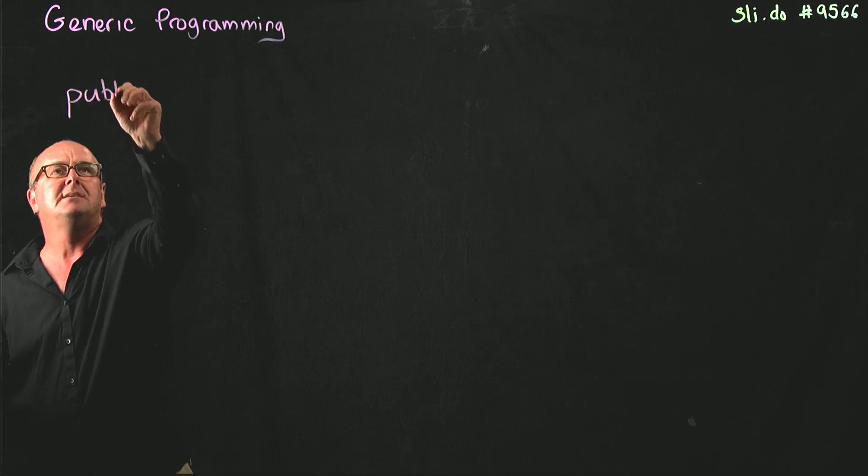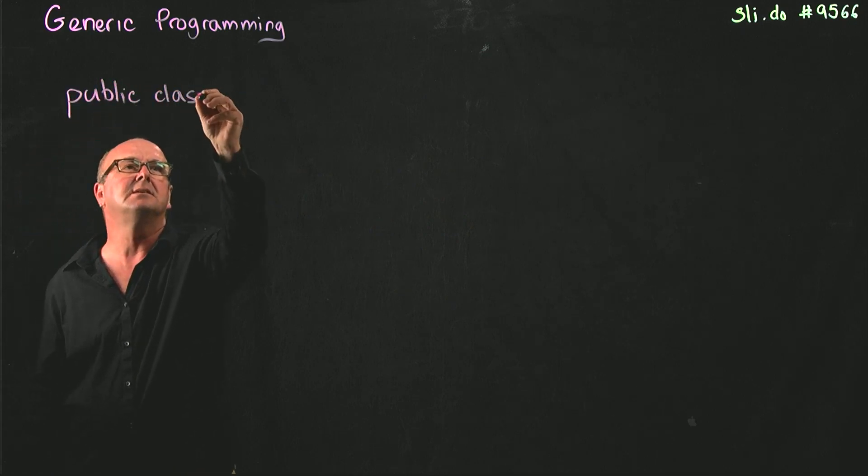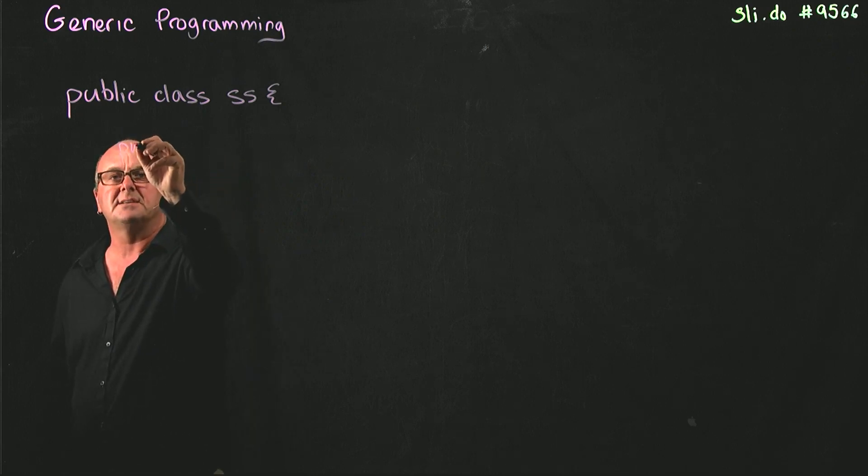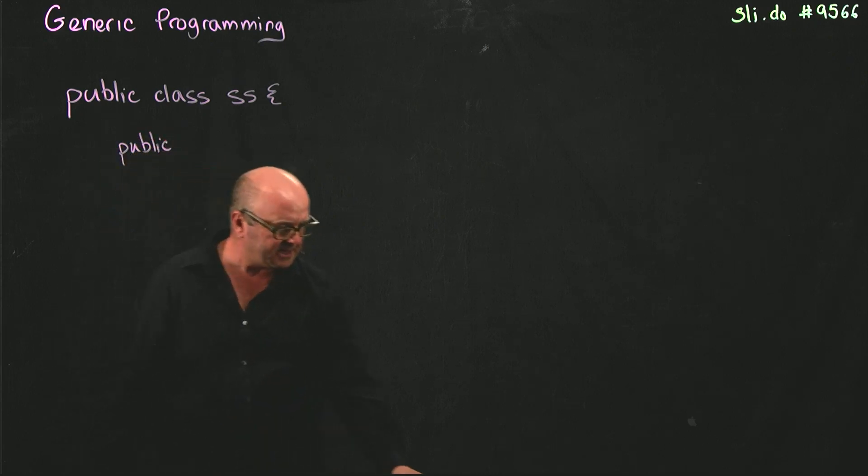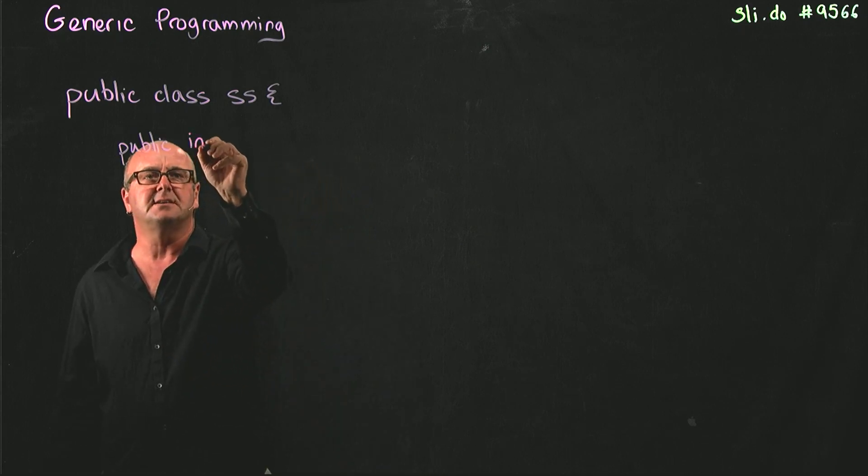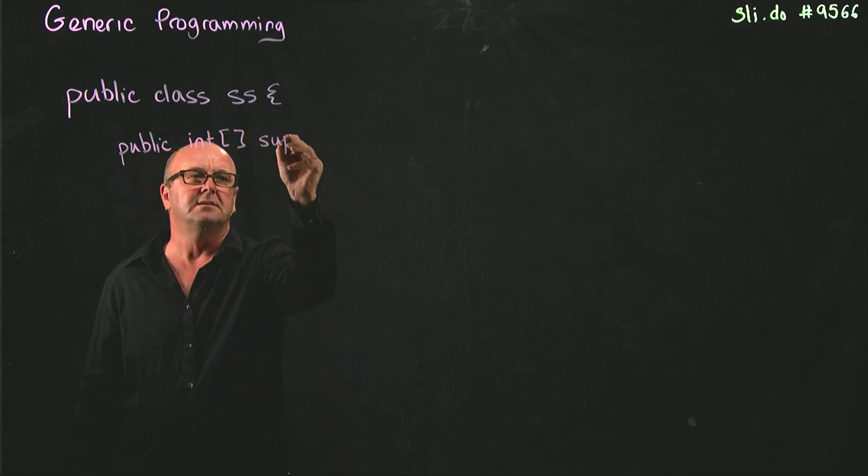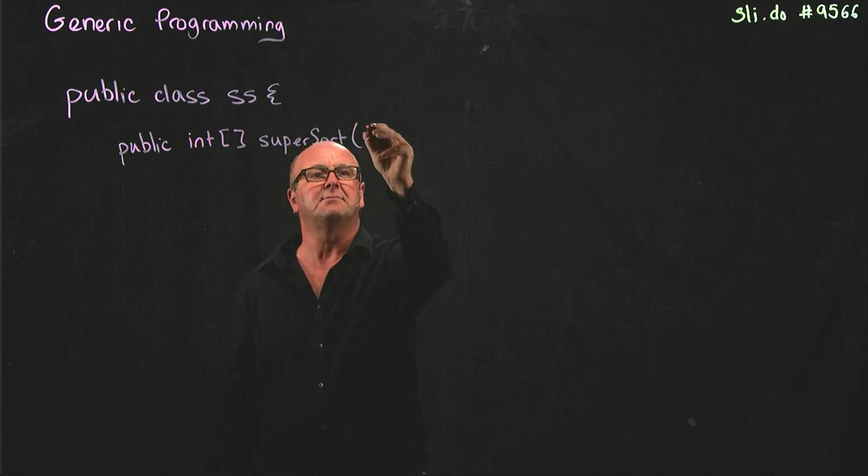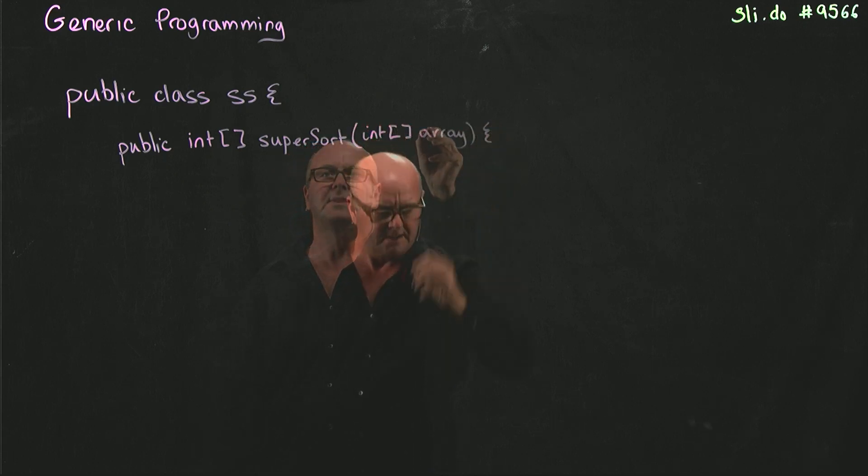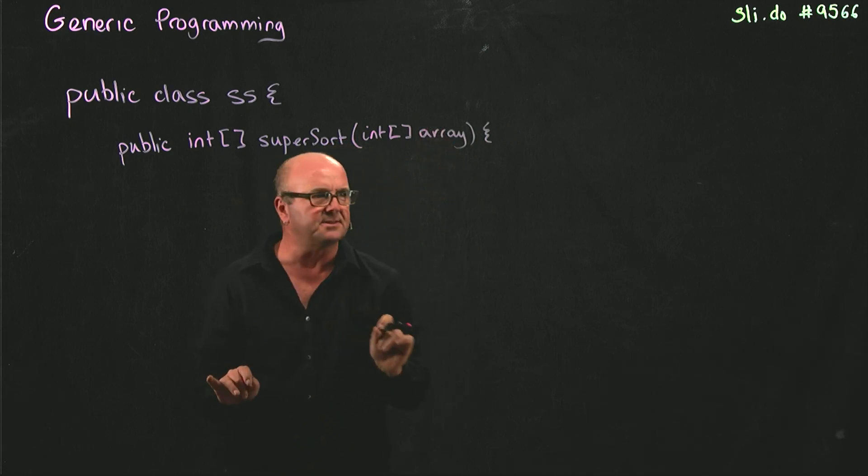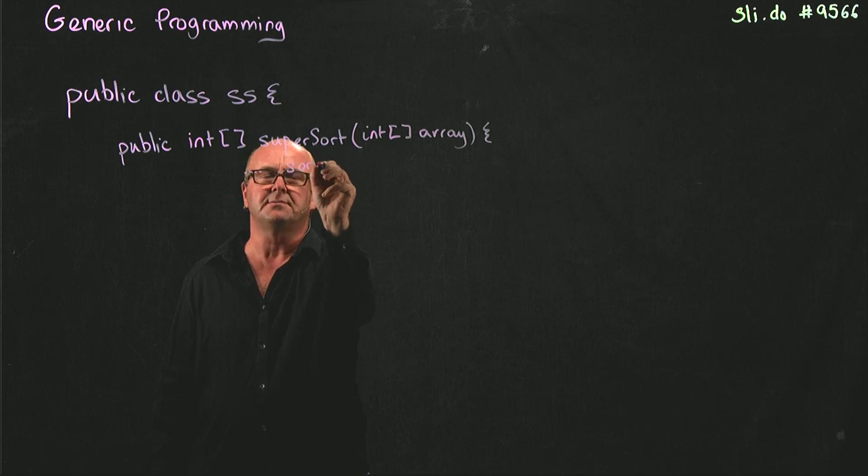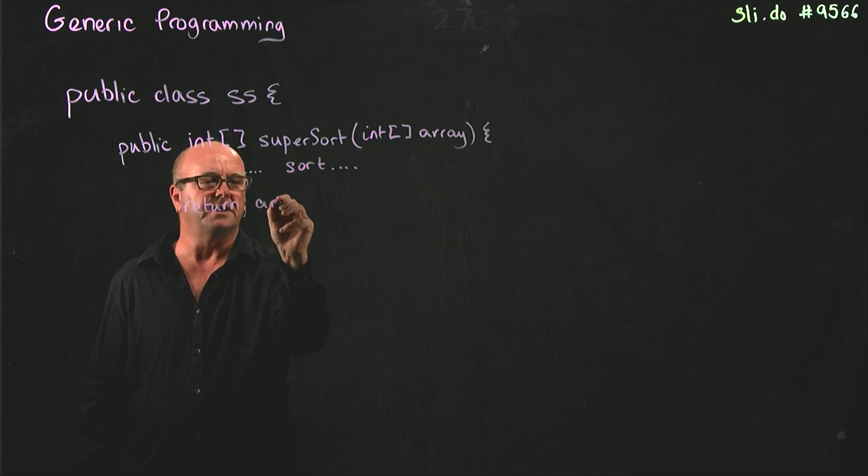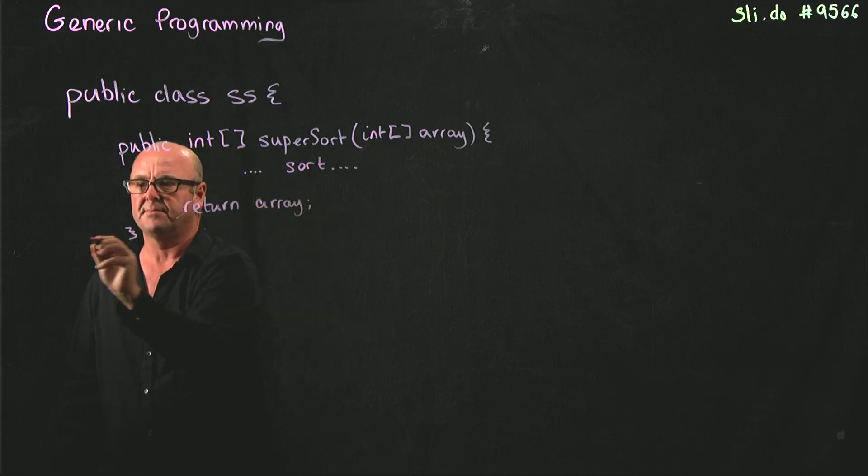So here is my supersort class. And somewhere in my class, I have a method, let's say, that takes an integer array, does a sort on them. And this is such an amazing sort. Nobody's ever come up with anything this brilliant before. I sort this array. I'm not going to tell you how I sort this array. I'm going to leave that as a surprise for you. So here we do a sort, and then we return our array. There's our class.